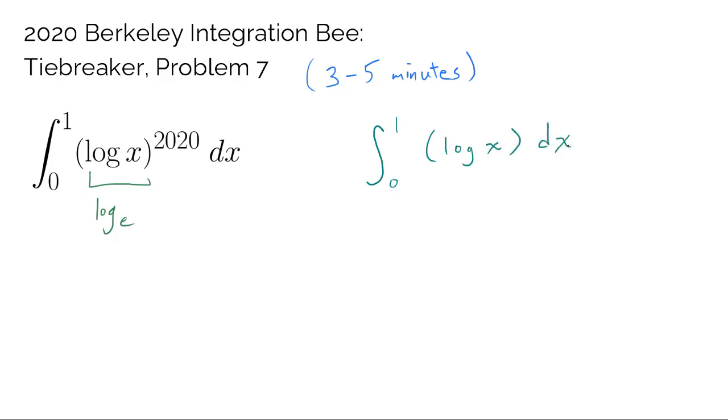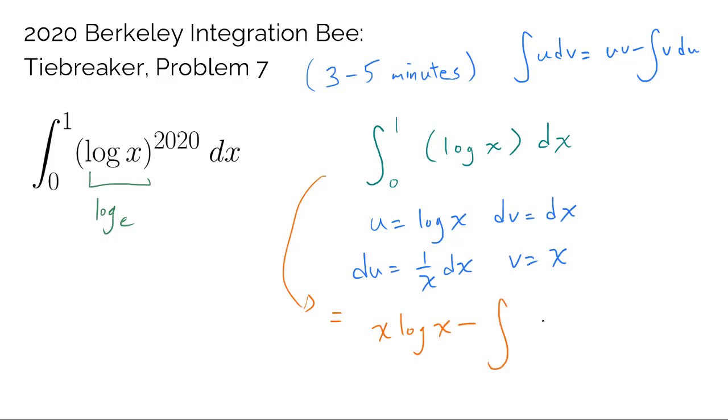If you recall, the standard way of evaluating this integral is by integration by parts, where you let u be log of x, and dv be dx, which gets us du is 1 over x dx, and v is x. This is very nice, because when you do integration by parts, you get integral of udv is uv minus integral of v du, and when you multiply v and du, x and 1 over x cancel out. So when you proceed to evaluate this, we get x times log of x minus integral of simply 1 dx